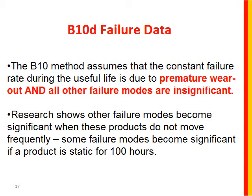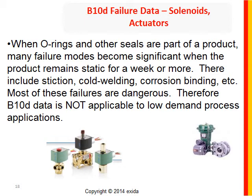Why do I say that? When O-rings and other seals are part of a product — like in a solenoid valve, actuator, ball valve, or most types of products used in the process industries — there are other failure modes, including stick-slip, cold welding, corrosion binding, and even metal-to-metal binding when moisture is present. Most of these failures prevent the product from performing its safety function and therefore are dangerous. You've got to be extremely careful about looking at the source of data. If a data source has any derivation based on mechanically dynamic applications, it should not be used in low demand. Often, when a certification agency uses such a method, they will post a warning on the certificate, stating they've assumed at least 10 demands per year — meaning do not use this information for process industries.